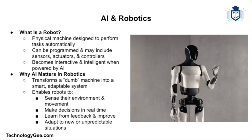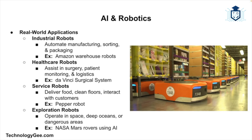Let's start with a crowd favorite: robots. When you picture a robot, what comes to mind? A humanoid machine, a factory arm assembling cars, or a cute robot dog? All of these are fair game, but what makes them smart is artificial intelligence. A robot is a physical machine that can carry out a series of actions automatically, especially ones that are programmable and interactive. When you add AI to the mix, your robot can sense its environment, make decisions, learn from feedback, and adapt to new situations — turning a dumb machine into a smart, flexible agent.